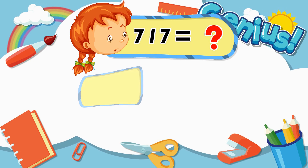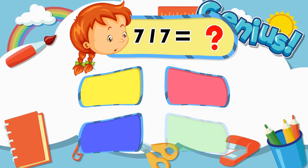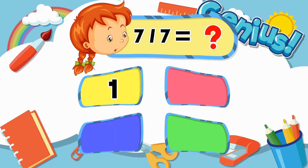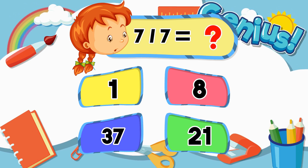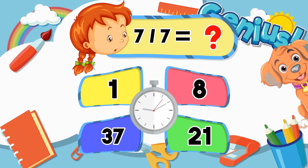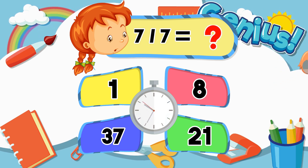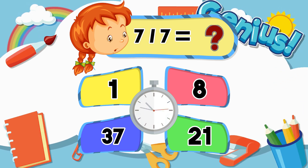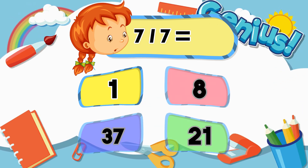What is 7 divided by 7? 1. 8. 37. 21. Correct answer: 1.